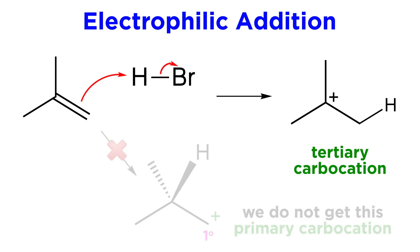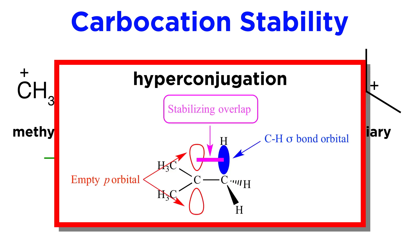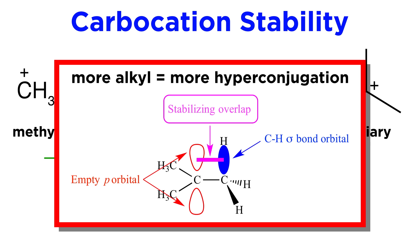Only the first pathway occurs, and never the second. The reasoning behind this is that carbocations become more stable as they are more substituted, meaning when they have more adjacent alkyl groups. This has to do with a phenomenon called hyperconjugation, where electrons in adjacent C-H bonds, which are roughly parallel to the lobes of the vacant unhybridized p orbital, lend some electron density to the carbocation, thereby stabilizing it. The more alkyl groups there are adjacent, the greater the effect.